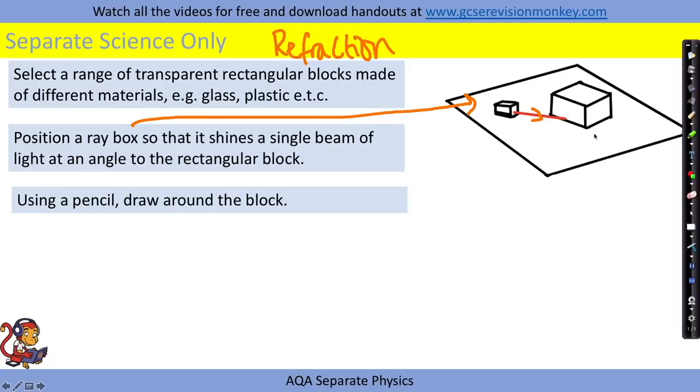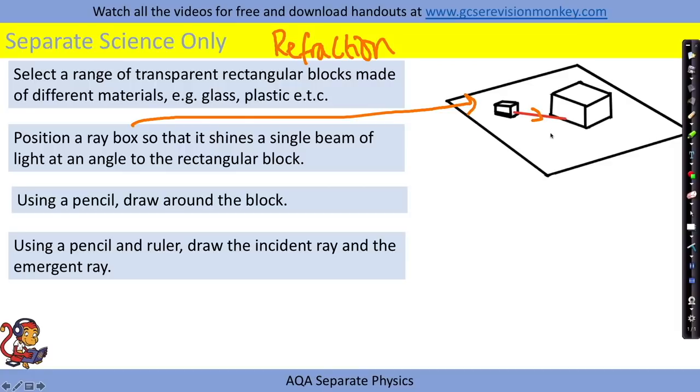And using a pencil and ruler we draw the incident ray which is this one here and the emergent ray that comes out of the block. So our diagram might look something like this to start off with.